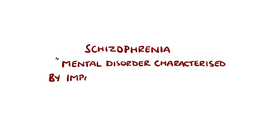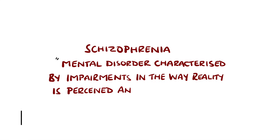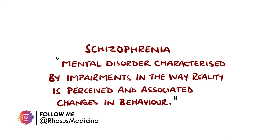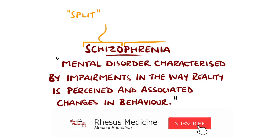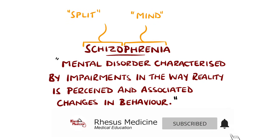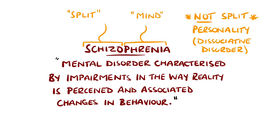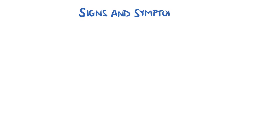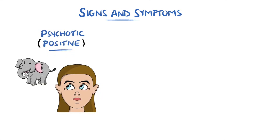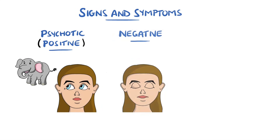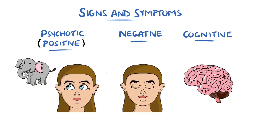Schizophrenia is a mental disorder characterized by impairments in the way reality is perceived, with associated changes in behavior. 'Schizo' means split and 'phrenia' means mind in Greek, but it is not meant to mean split personality, which is a separate condition. Schizophrenia affects how people think, feel, and behave, and the symptoms are divided into three main types: psychotic or positive symptoms, negative symptoms, and cognitive symptoms.